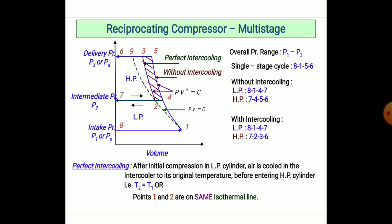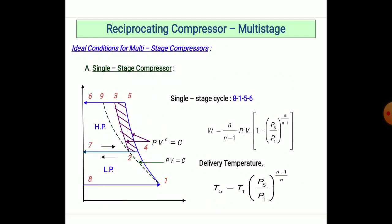By doing multi-staging, the portion on your screen indicated by the hatching line shows perfect intercooling from point 3 to 5, while without intercooling it follows line 3 to 2 to 3. The PV raised to gamma is constant in both stages, but the volume required in the next stage is very large compared to the first stage. Perfect intercooling can be achieved after the initial compression in the low-pressure cylinder, where air is cooled in the intercooler back to its original temperature T1 before entering the high-pressure cylinder, meaning T1 equals T2 equals T1, and points 1 and 2 lie on the same isothermal line.